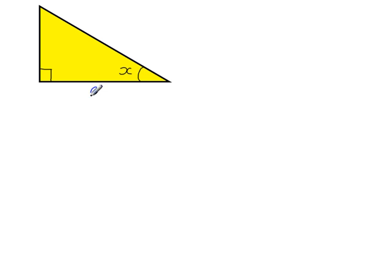So this is the adjacent side. This is the opposite side to the angle X. And this side of the triangle is the hypotenuse.